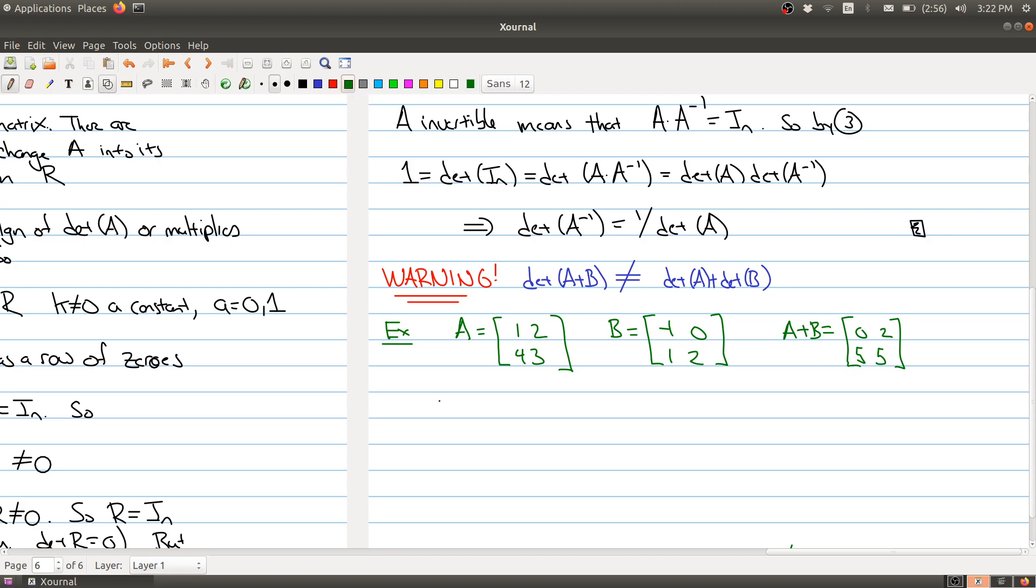Our first matrix here has determinant of A equaling minus 5. The determinant of B is negative 2. And the determinant of A plus B is minus 10. And you see that these two numbers, minus 5 plus minus 2, obviously does not equal minus 10.